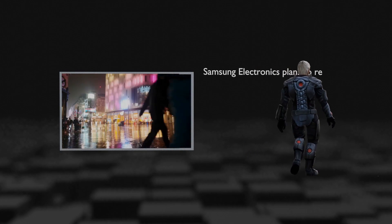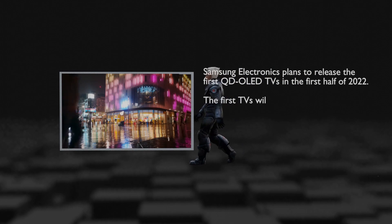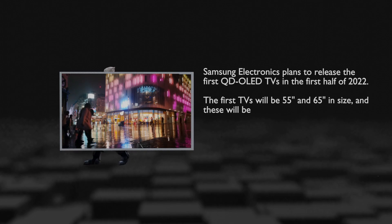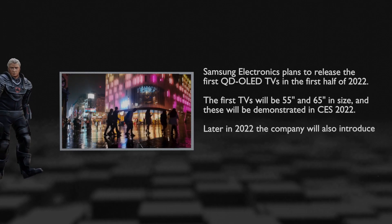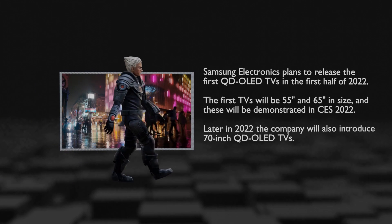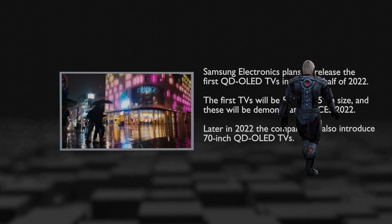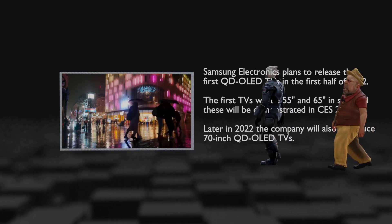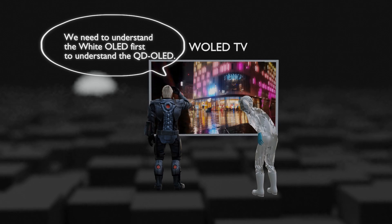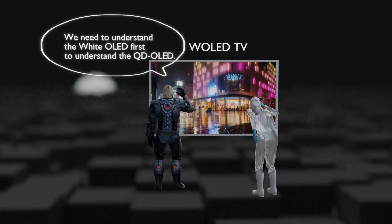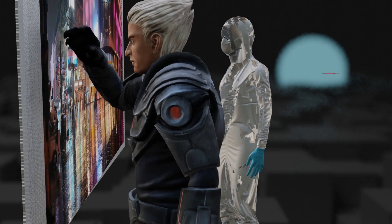It was announced that it would produce 1 million units per year on a 65-inch basis. How is QD OLED different from LG's white OLED? And why did they choose QD OLED rather than the same white OLED as LG? The response of Samsung Electronics has not been very favorable yet. So why? Will Samsung Display's strategy be successful? To approach the answer, it is essential to understand the basic structure of white OLED. We will cover this issue in today's video.